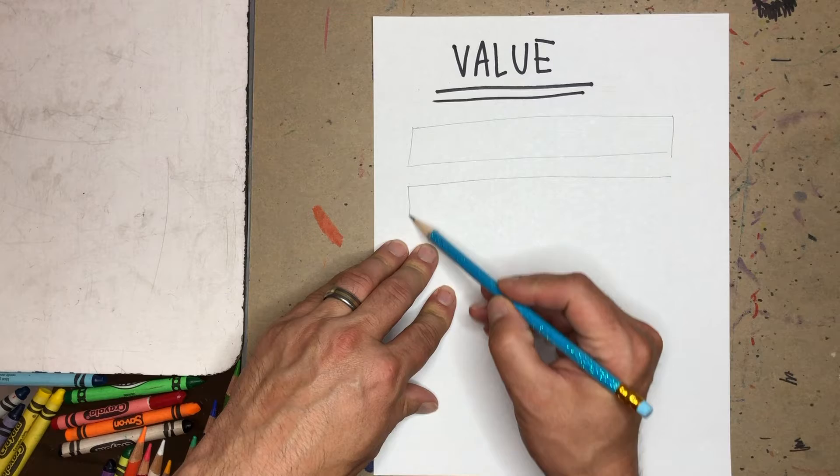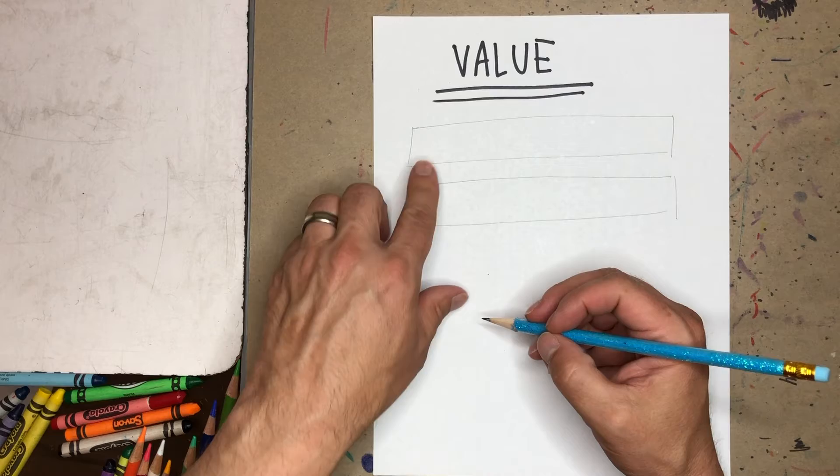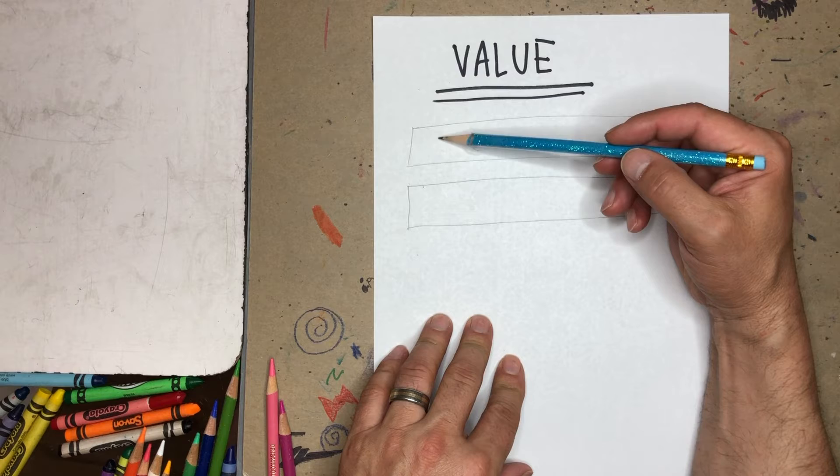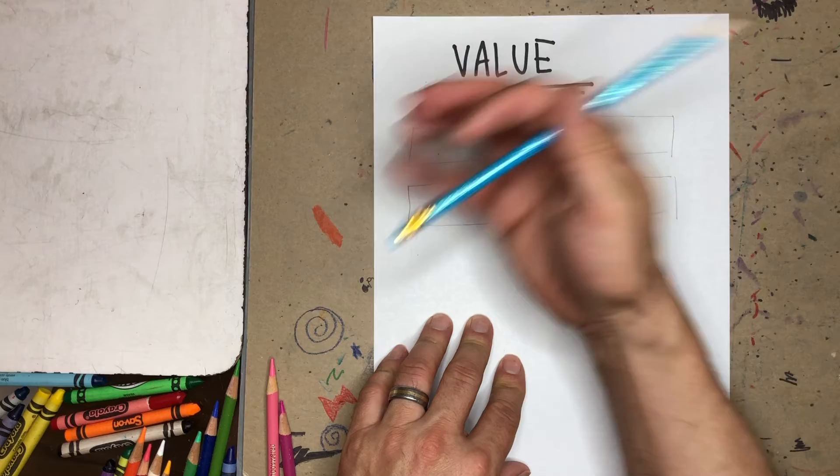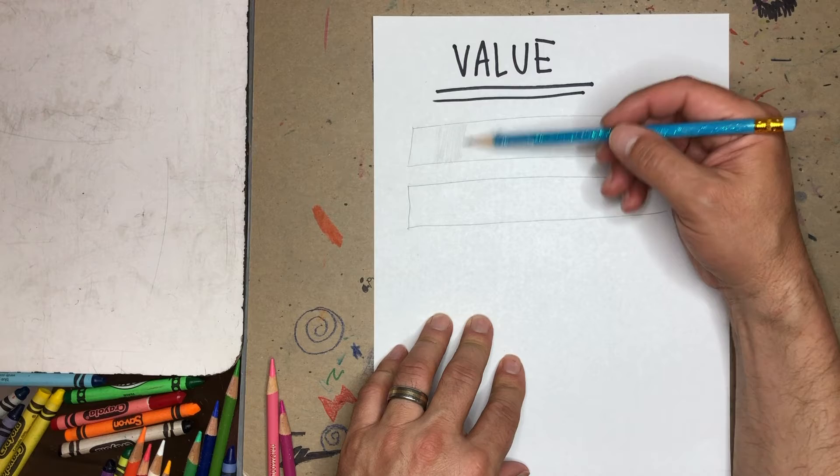So I'm going to start out by making two rectangle shapes, very thin rectangle shapes in pencil. And at first, we're going to do a grayscale, starting with white and then lightly drawing, applying a little bit of pressure to get a very light gray, and then gradually get darker.